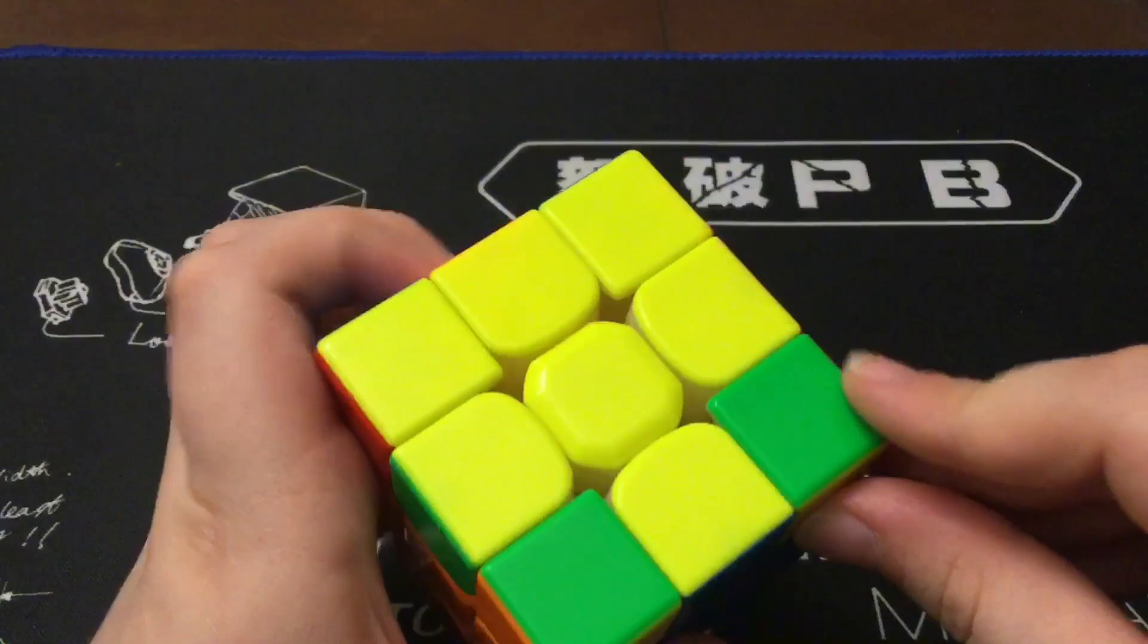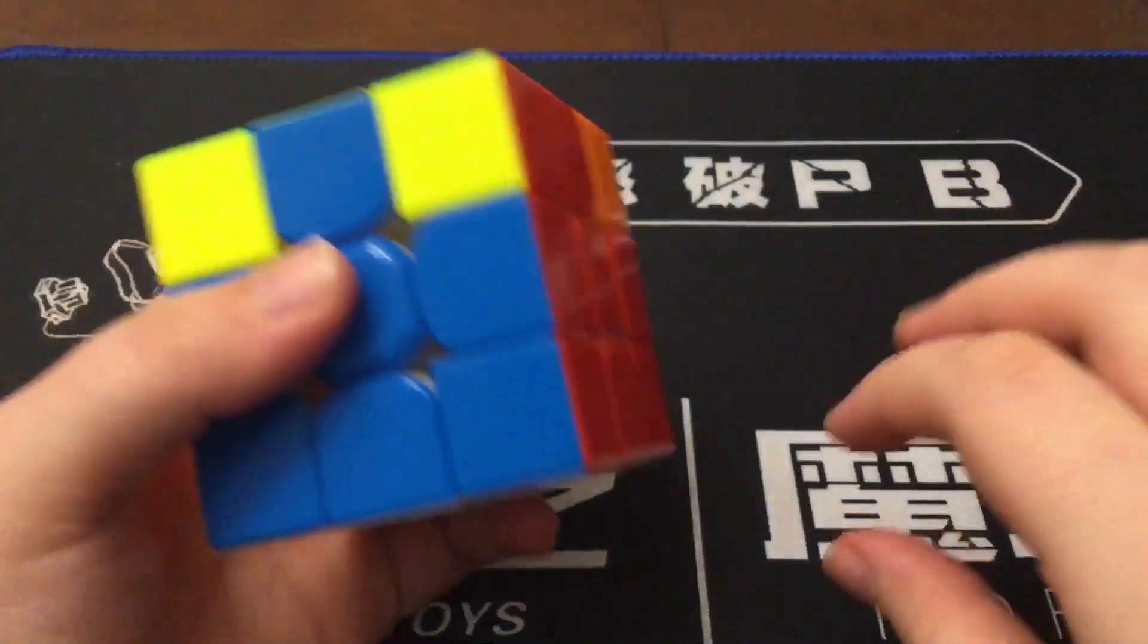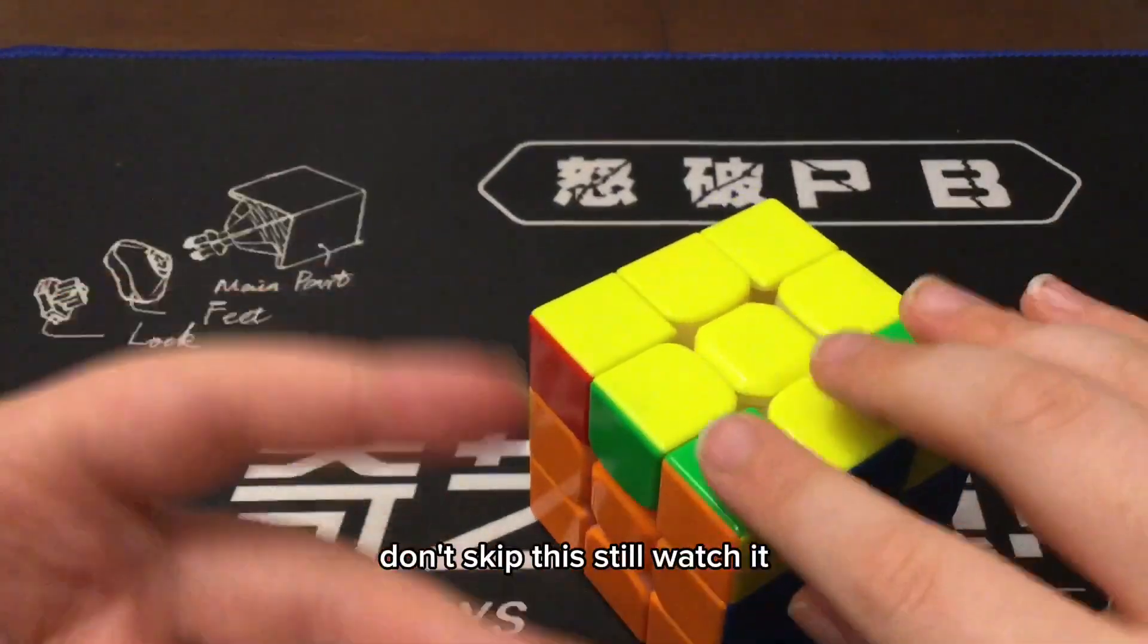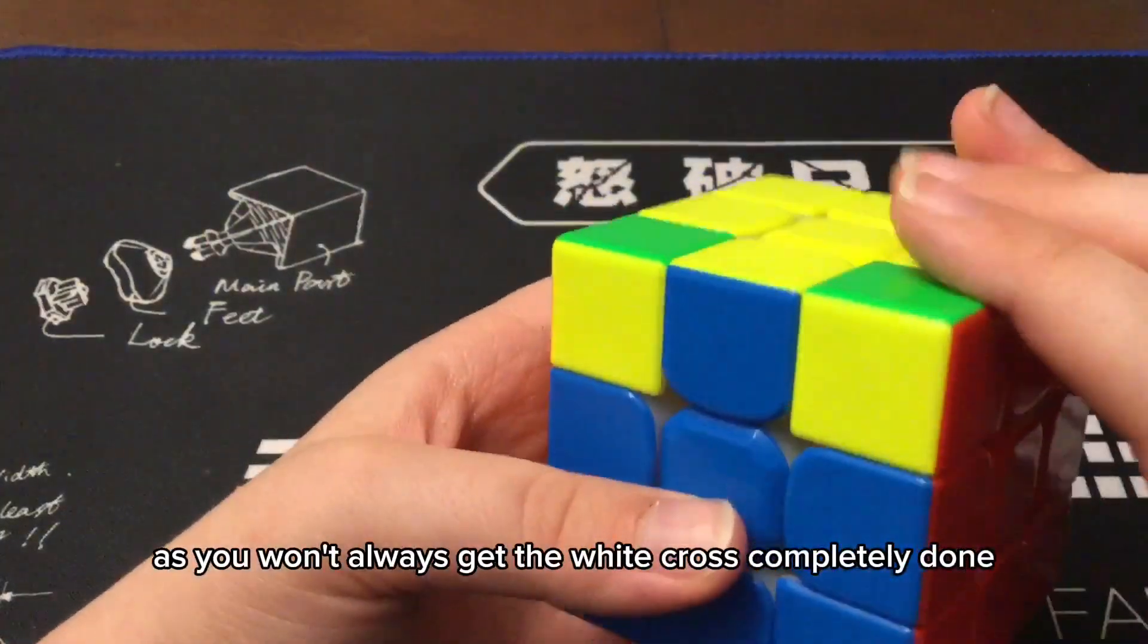The first case is if the yellow cross is already done. If that is, skip this. Wait, no, don't skip this. Still watch it, as you won't always get the white cross completely done.